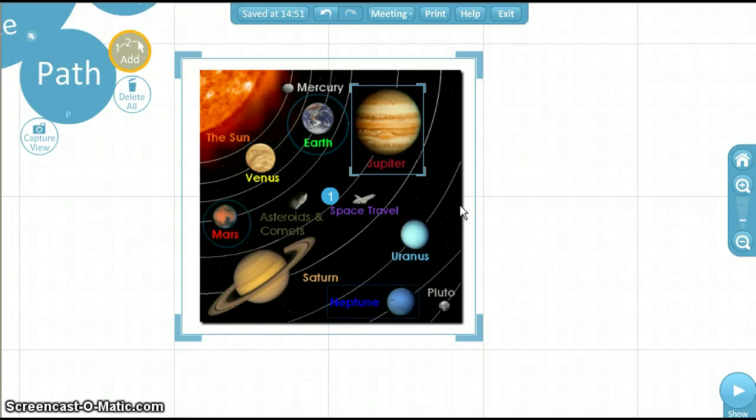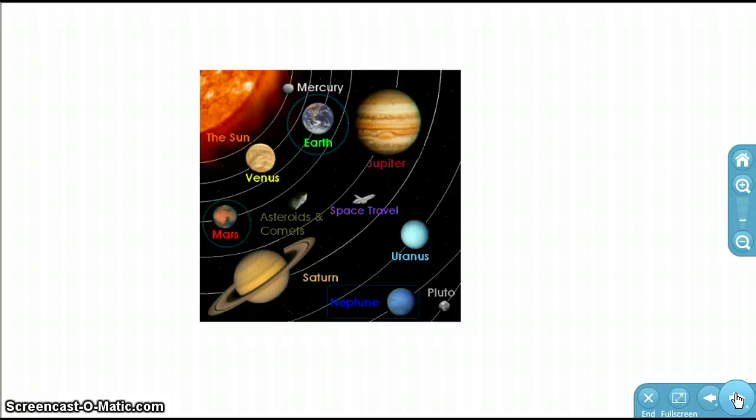A blue circle with the number 1 should appear in the middle of your image. If we click Play at the bottom right corner of the screen, we will see what happens. Click the right arrow to advance the presentation.